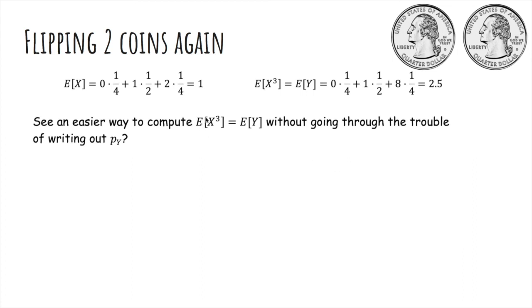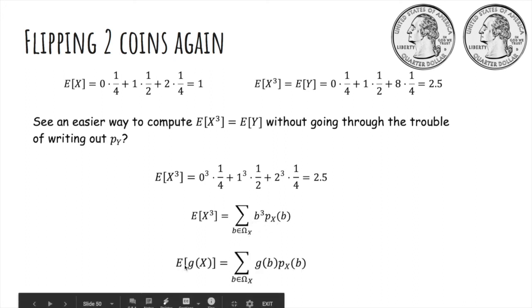So is there an easier way to compute the expected value of x cubed without going through the trouble of writing out the probability mass function of y? And if you stare at these formulas long enough, you'll see that if I rewrite this formula to be 0 cubed, 1 cubed, and 2 cubed, you'll see that the expected value of x cubed was actually the sum of the values of the range of x of that value cubed times the probability of that value. And so in general, if you want the expected value of a function of x, you can just apply that function before you're multiplying by the probabilities.